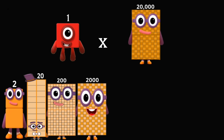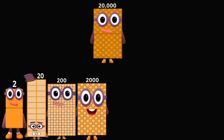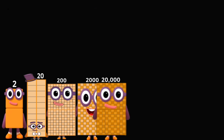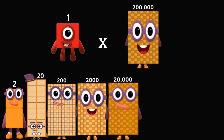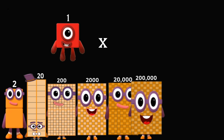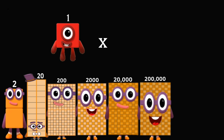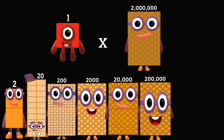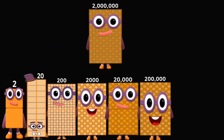1 times 20,000 equals 20,000. 1 times 200,000 equals 200,000. 1 times 2,000,000 equals 2,000,000.